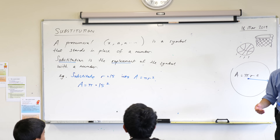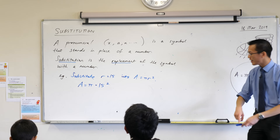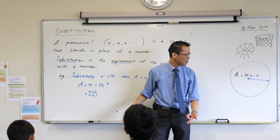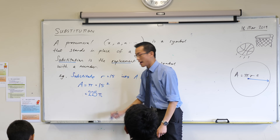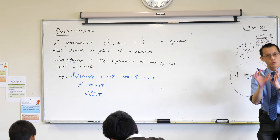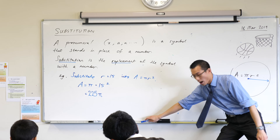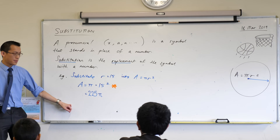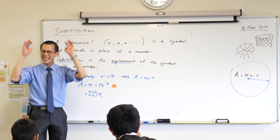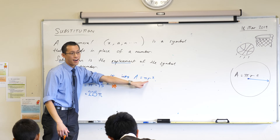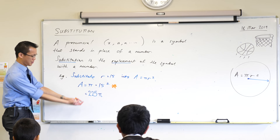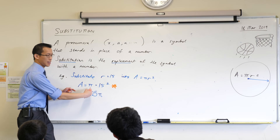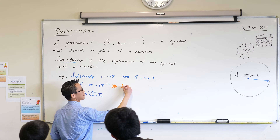Now some of you might already know what 15 squared is — can anyone tell me? 225. Very good. So my next line is going to be 225 pi — we tend to write the number first when you've got other letters like pi around. And that would be the area of the circle. But it's really important — and I'm going to highlight this, if you have another color that'd be fantastic — see this line in here? This is what we call the substitution line. I still want to write 15 squared there so I can see I'm swapping it for what's there. This is the substitution line.